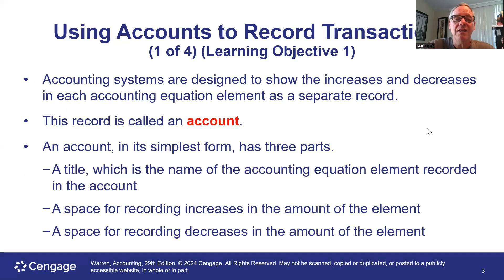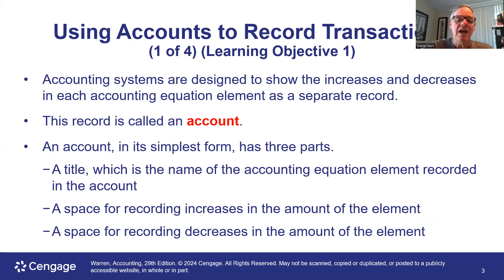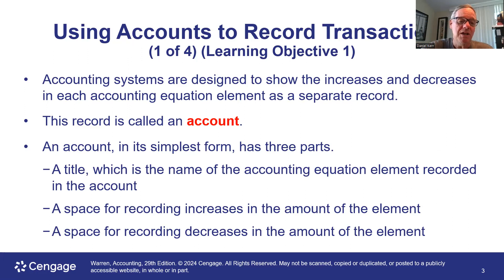Accounting systems are designed to show the increases or decreases in each accounting equation element. Anything that affects the accounting equation is a transaction, and transactions are recorded not in columns but in an account. An account in its simplest form has three parts: a title — examples might be cash, land for assets, or mortgage payable for liabilities — and then a place to record increases and decreases within each account.